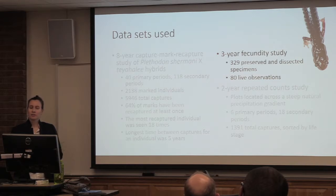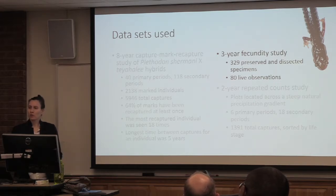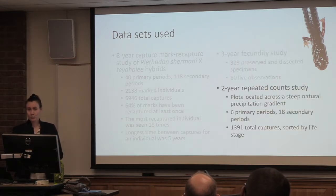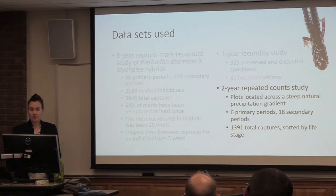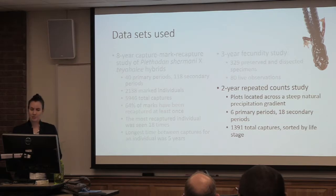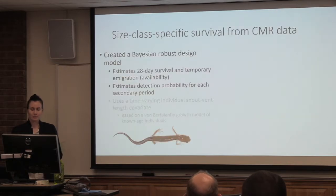Then we did this three-year fecundity study where we preserved and dissected 329 specimens and made 80 live observations. Some of these salamanders have really dark stomach skin and you can't see their eggs, but some have light stomach skin and you can. So when we could count eggs in live animals, we did; when we couldn't, we collected and dissected them. We also did a two-year repeated count study across the precipitation gradient in the basin, with 6 primary periods, 18 secondary periods, and 1,391 total captures, sorted by life stage: juveniles, hatchlings, sub-adults, and adults.